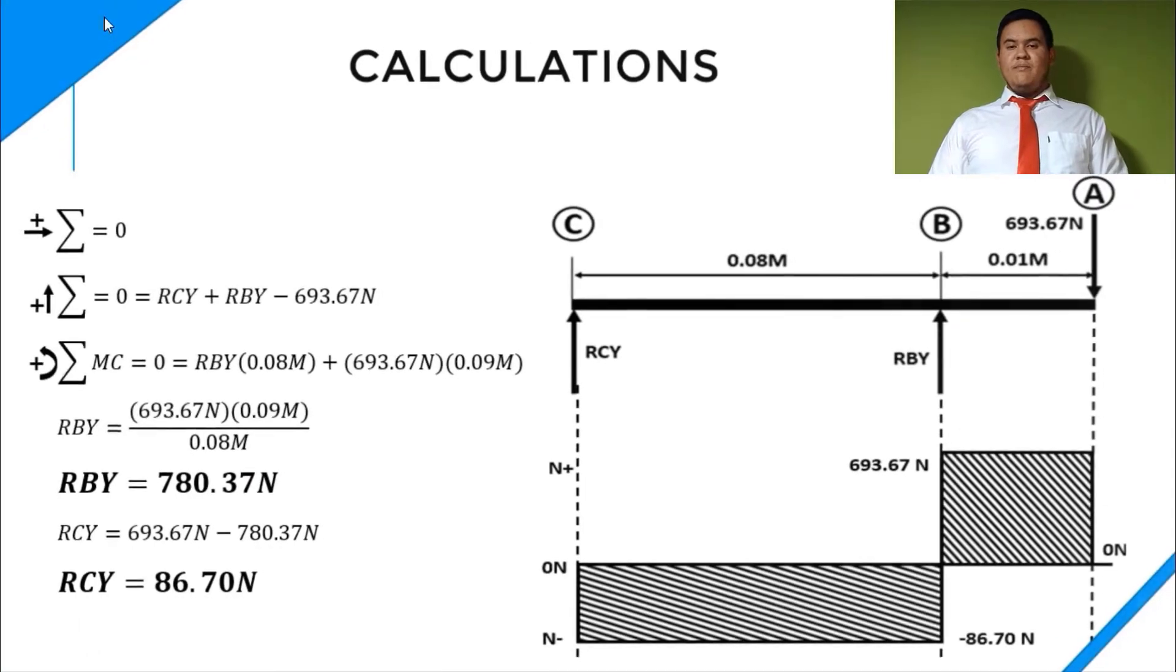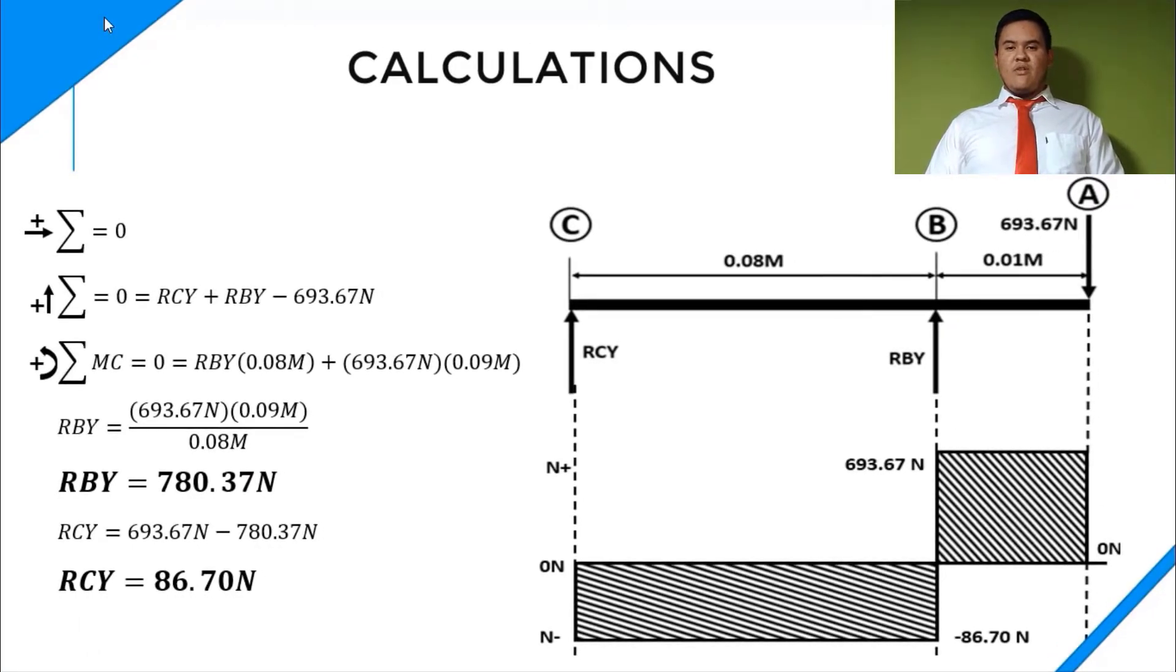To calculate those forces we need to do three summatorial forces. The first summatorial forces are in X. So we have a force that are applying in X. This is equal to zero. The second summatorial is in Y. In this part we have the two forces that we don't know the value and the principal force that we know the value. So to know one of these forces, we need to do a summatorial moment in C. So applying those calculus, we obtain that RBY is equal to 780.317 newtons.